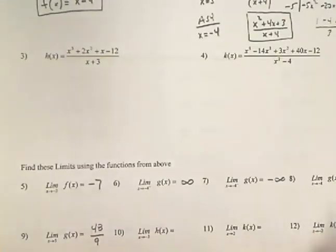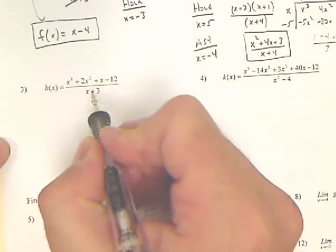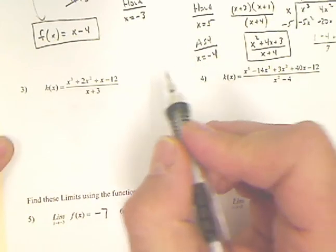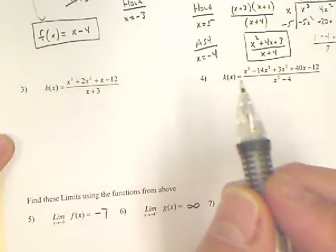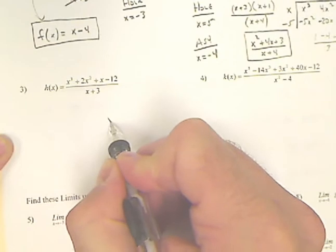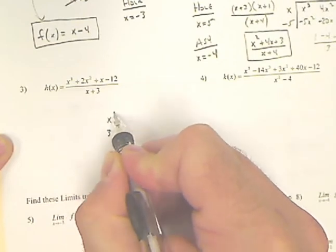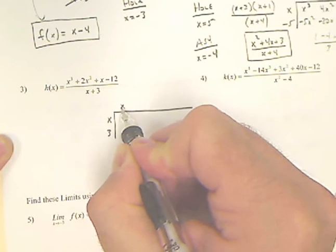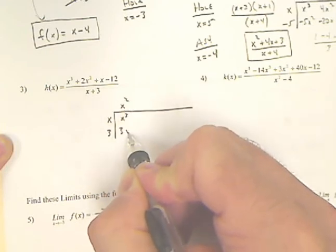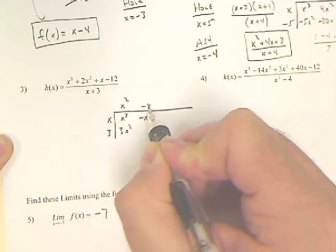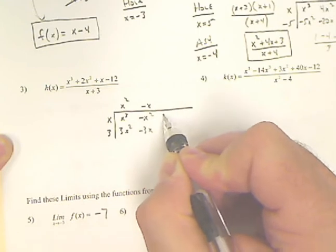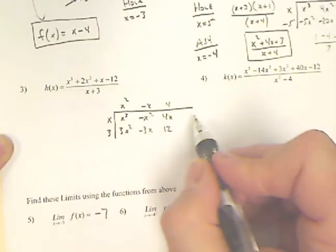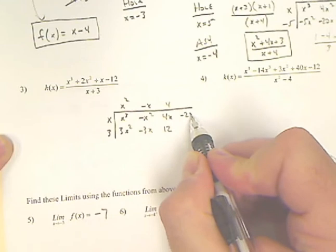Number 3, we should have time to get 3 done. We need to figure out if x plus 3 is in that numerator. If it is, we found a hole. If it isn't in there, then we found an asymptote. So we do long division with our x plus 3. And it was close, but we have a remainder of negative 24.